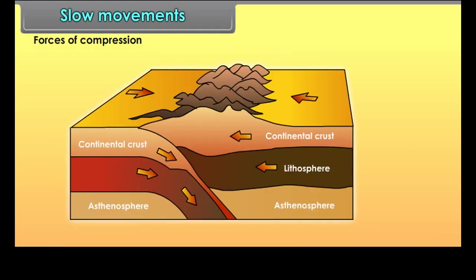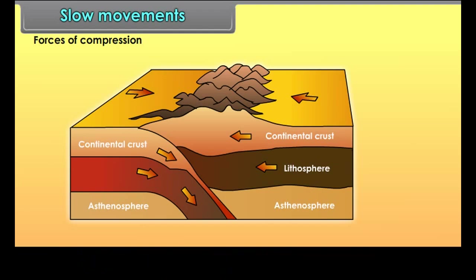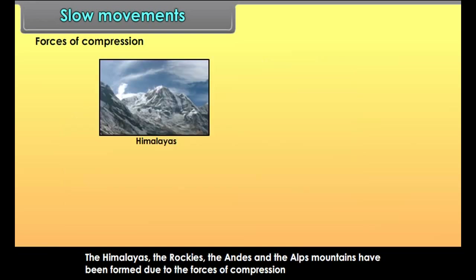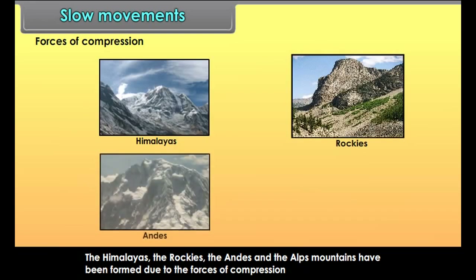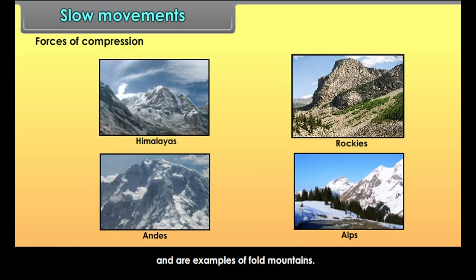Forces of compression act on the rock strata from opposite directions, due to which the rock layers are bent up or folded into a series of anticlines and synclines. These forces are responsible for the formation of fold mountains. The Himalayas, the Rockies, the Andes and the Alps have been formed due to the forces of compression and are examples of fold mountains.